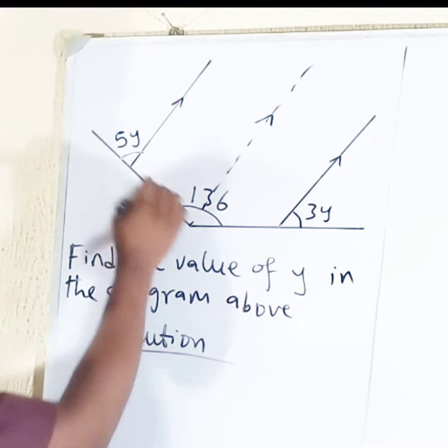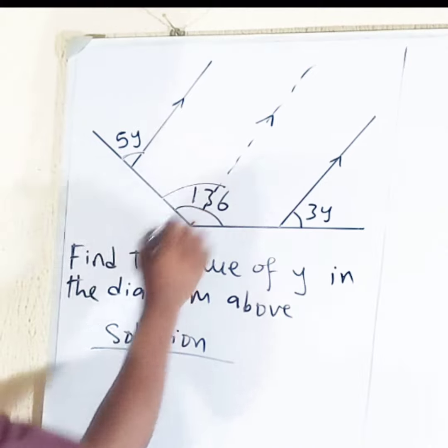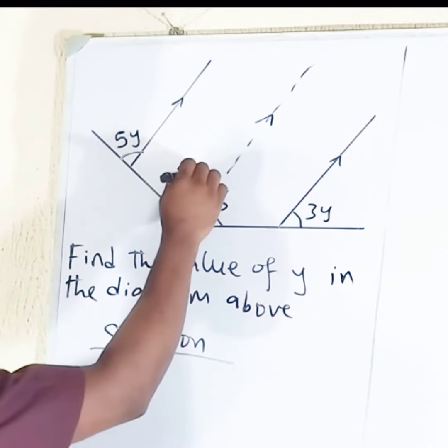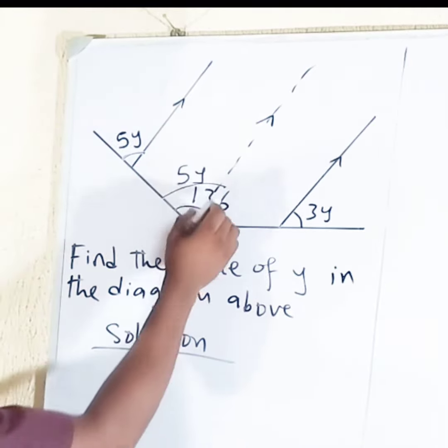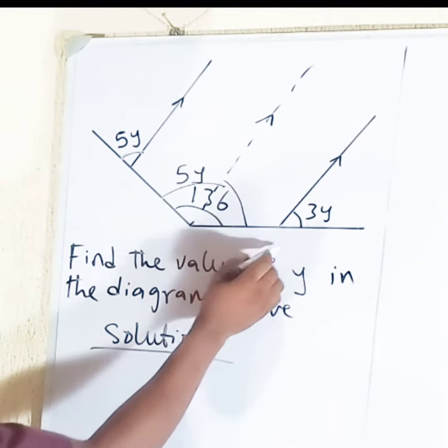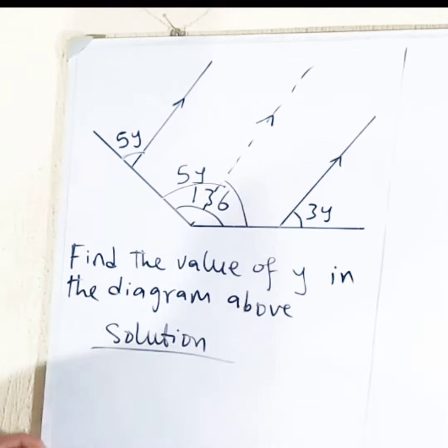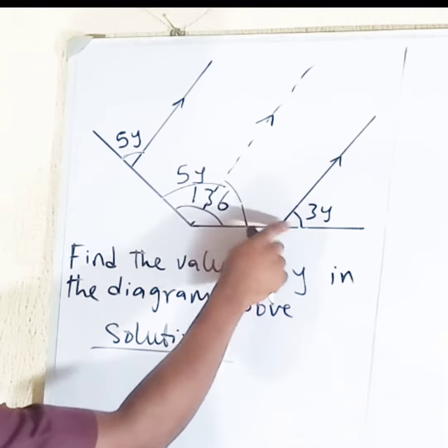This angle 5y is equal to the value of this angle here. We have 5y here, then this one is also equal to this 3y. They are corresponding angles.